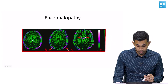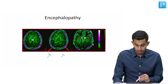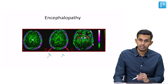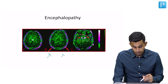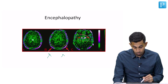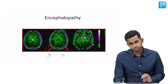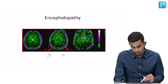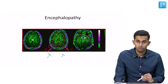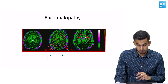On MR perfusion, there is no perfusion at all in the brain. The internal carotid arteries appear as bright signals, and the external carotid artery also shows perfusion, but the brain itself will not show any perfusion — which also confirms that the patient is brain dead.